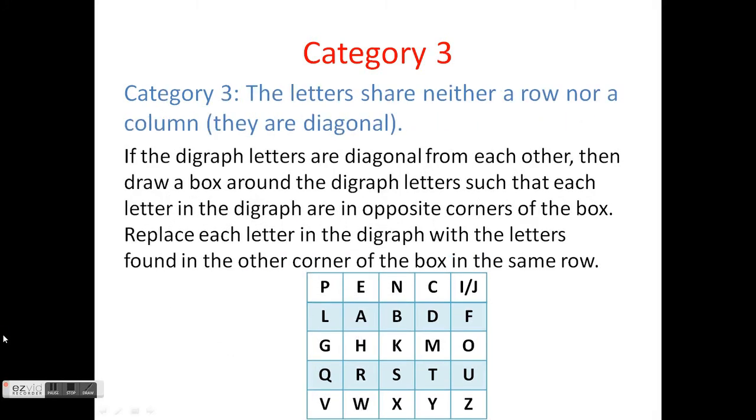So let's look at the plaintext digraph RD. Highlight the R, and then highlight the D. R and D are not in the same column or same row, so our first step is to draw a box around R and D, with R and D in opposite corners. Then we look at the letters in the same row, but on the other corner of the box. R becomes T, D becomes A. So RD becomes TA.